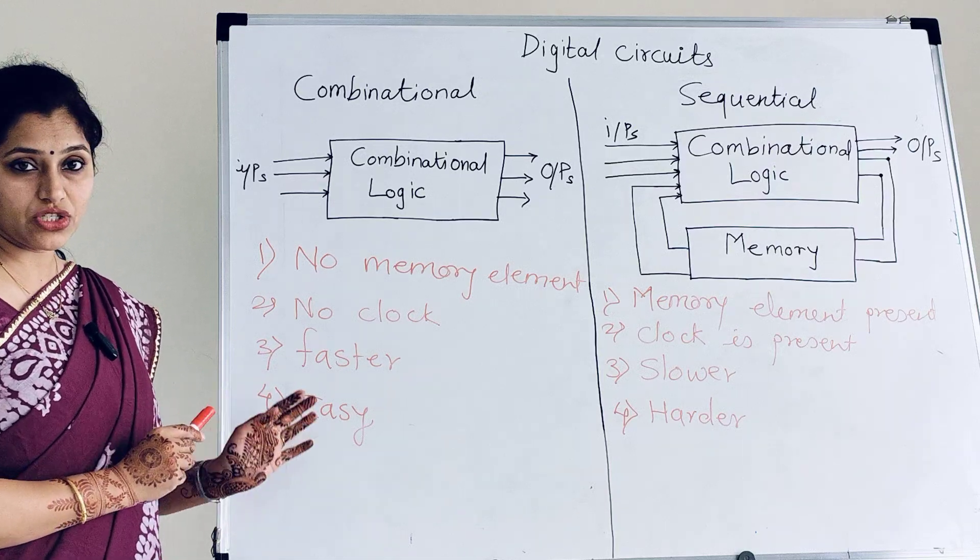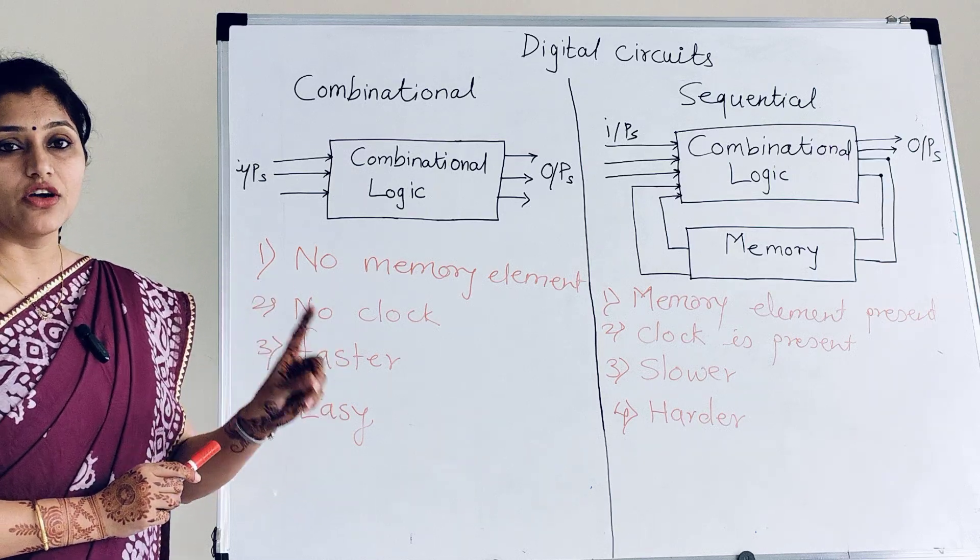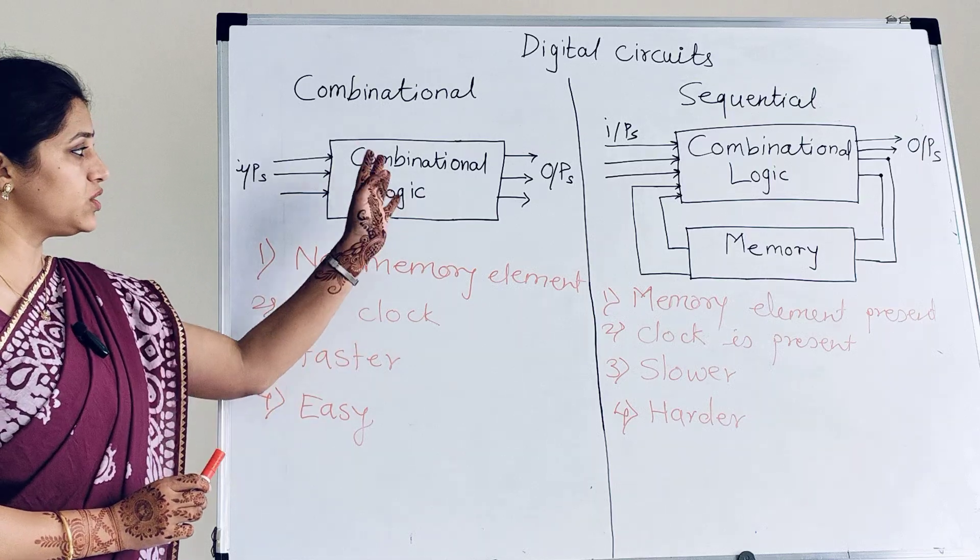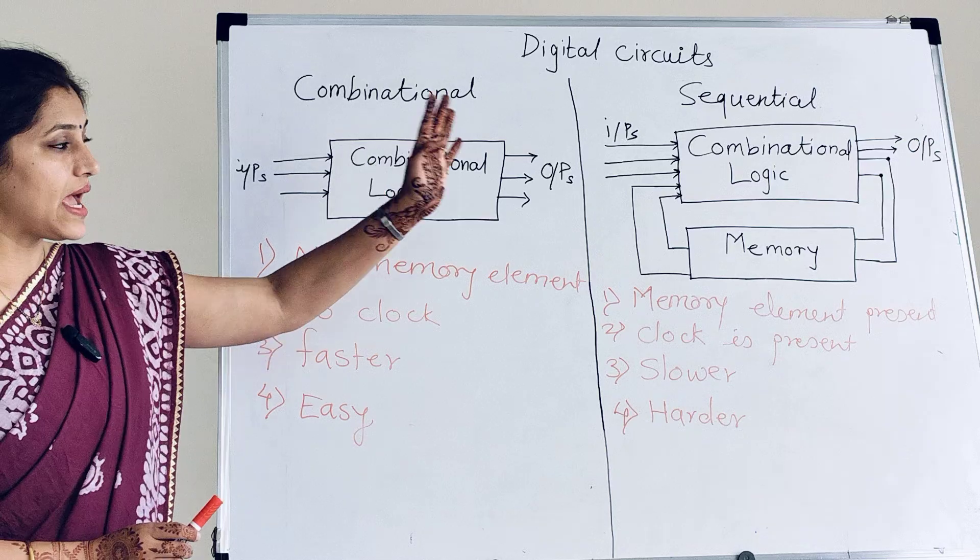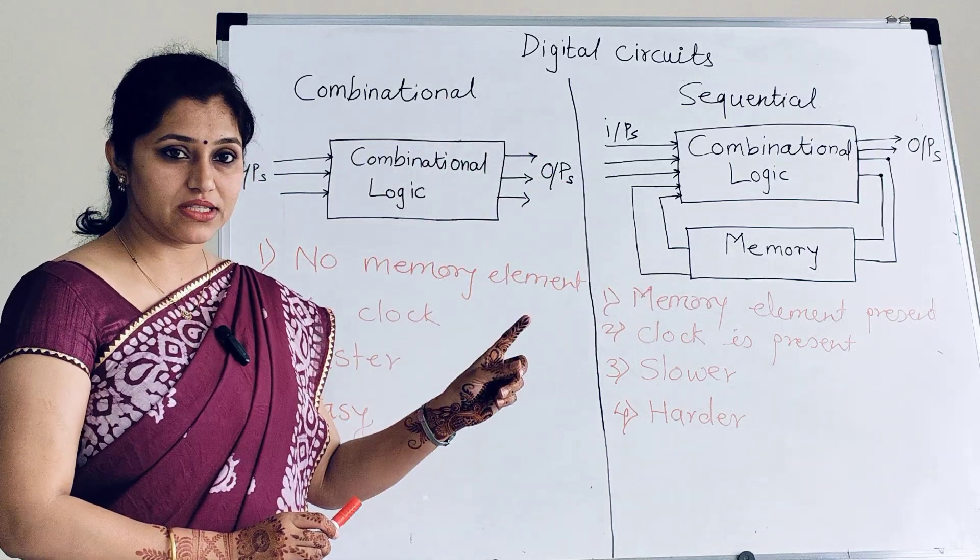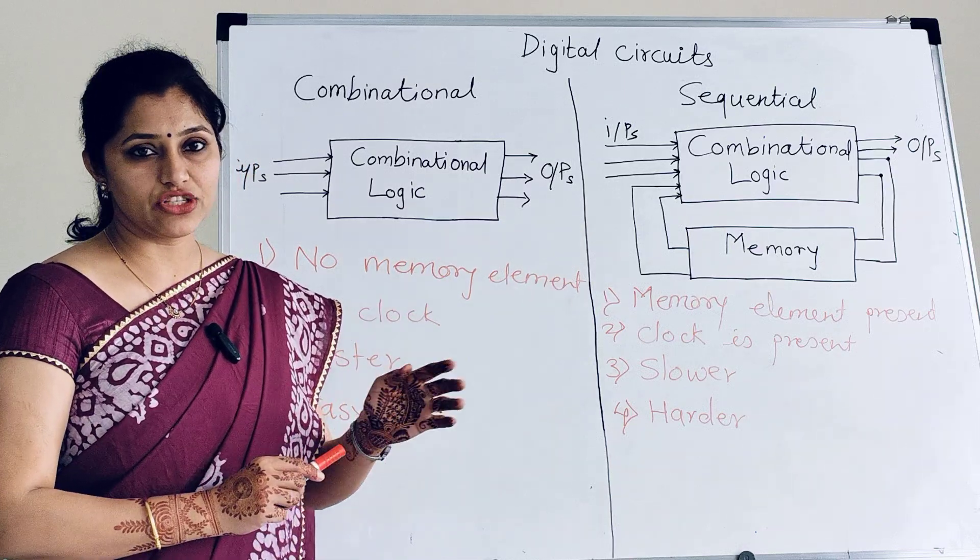Examples of combinational are mux, demux, adders, subtractors. Wherever clock is absent, flip-flops are not present, and output depends on present inputs only, those are combinational circuits. And in sequential, wherever flip-flop is present, clock is present, there are sequential circuits like registers, counters, etc.